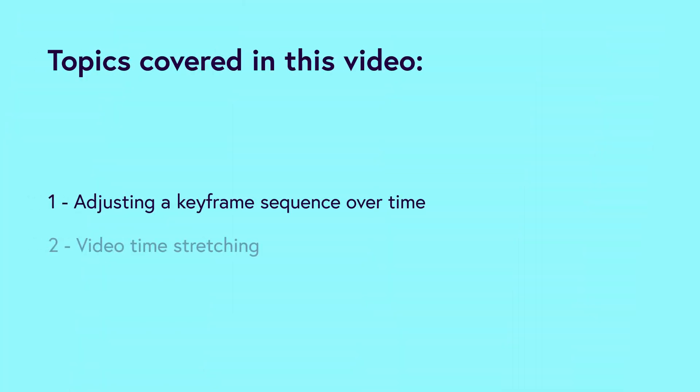As you start to build in After Effects there are going to be various occasions where you will want to customize the time it takes for an effect to happen, the speed of an animation, or even the speed of a video. In this video I'm going to demonstrate how you can easily slow down or speed up your keyframe sequences and use a feature called time stretching. We are going to cover adjusting a keyframe sequence over time and video time stretching.